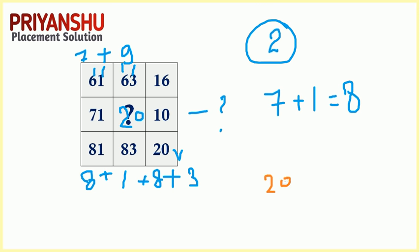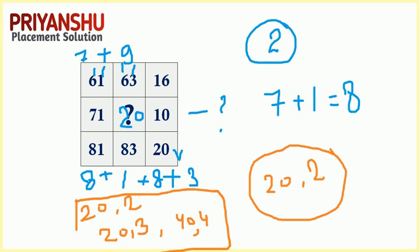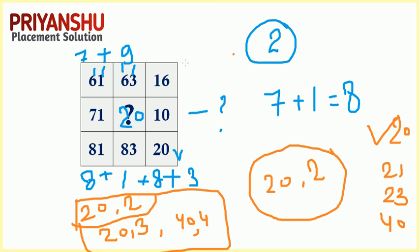As per the options given, you can select 20 or 2. They may provide both options like 20 and 2, or single options like 20, 21, 23, 40. In that case, check for 20. I hope you got it. Let's move to the next question.